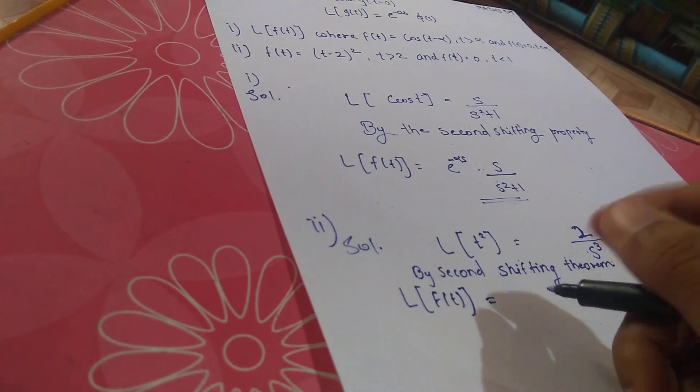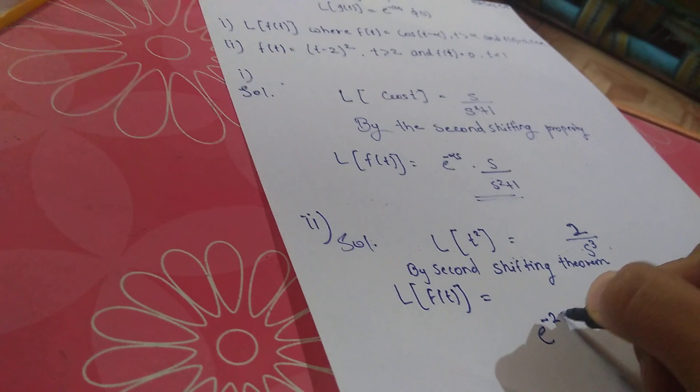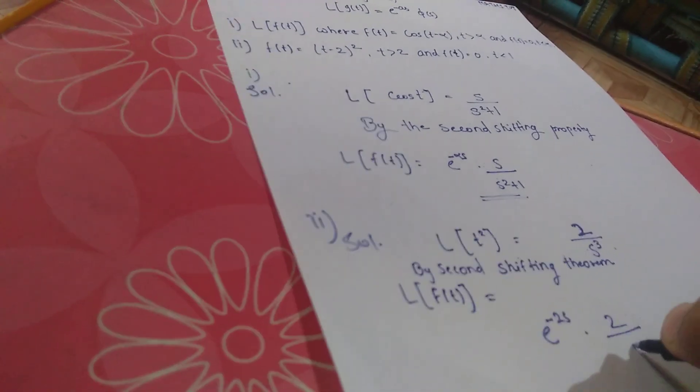As per the formula, a is 2, so it is e raised to minus 2s times 2/s^3.